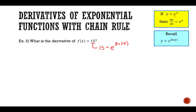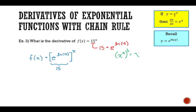Using this relationship, f(x) = 15^x becomes (e^(ln 15))^x. Applying the exponent rule — x^a all raised to b equals x^(ab) — we multiply the exponents, giving e to the power of x · ln(15). Now the expression is written as e to the power of a function of x.